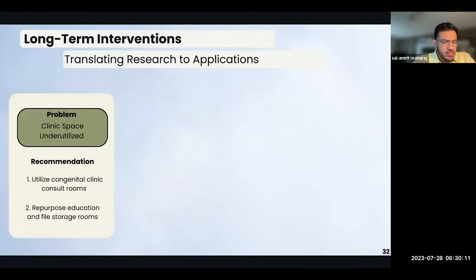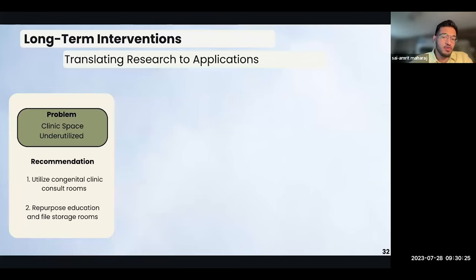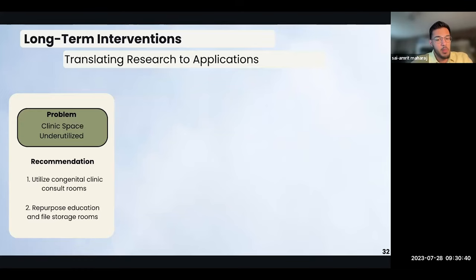Moving on to the long-term interventions, the first proposed recommendation is to better utilize the available clinic space. Currently the HF clinic shares space with a congenital ambulatory cardiac care clinic, which can be less busy than the HF clinic, being that it's often overbooked on certain days of the week. We suggest the HF clinic coordinate with the congenital physicians to use some of their clinic space during the HF clinic's peak busy days. We also suggest repurposing the education and file storage rooms in the HF clinic, as they are currently underutilized but can be used for alternative purposes directly related to patient care, such as consult or stress test rooms.